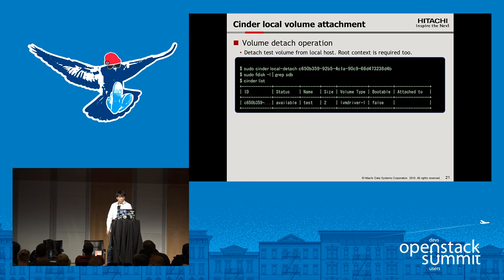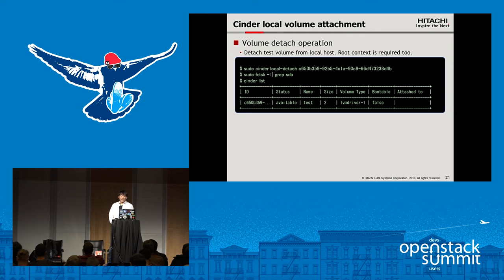This shows the Cinder local detach. The argument is the volume ID or volume name. After local detach, the volume is disconnected from the target server.